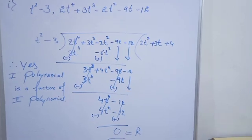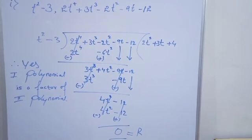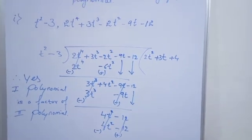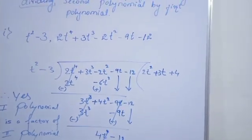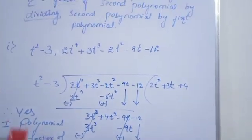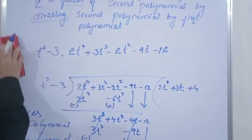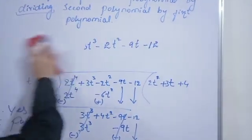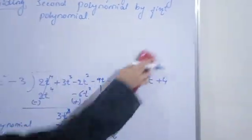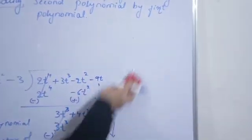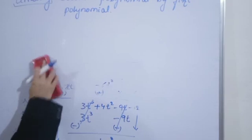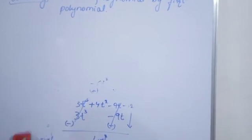Same, hume check karna hai ki factor hai ya nahi, to hum ise rewrite kar lenge. Agar remainder 0 aaya to it is a factor. Agar reminder 0 nahi aaya to it is not a factor of polynomial — first polynomial is not a factor of second polynomial.